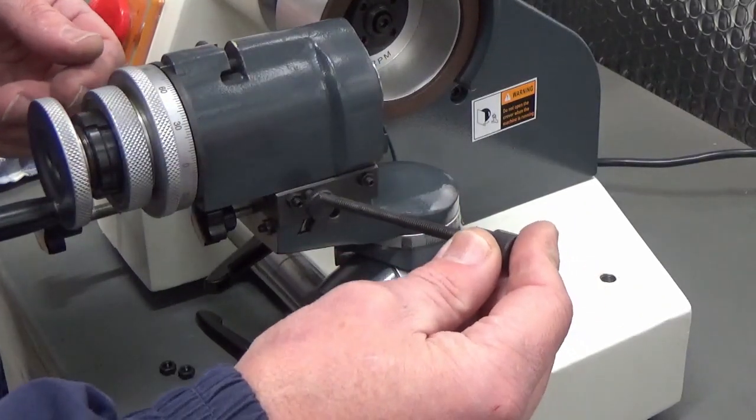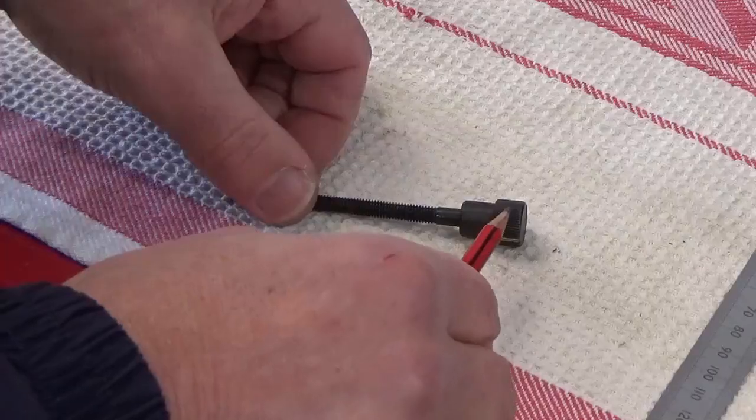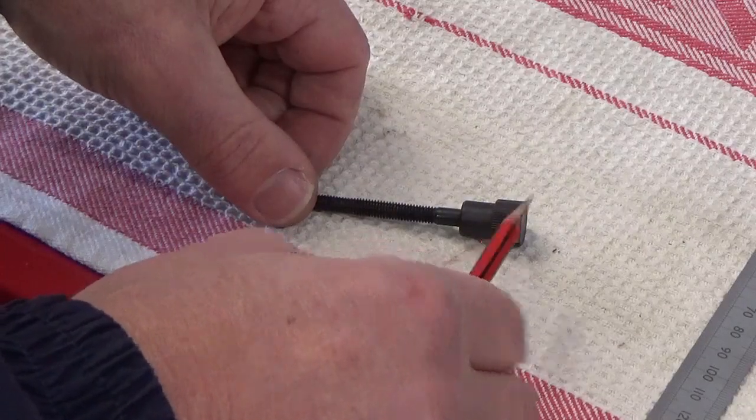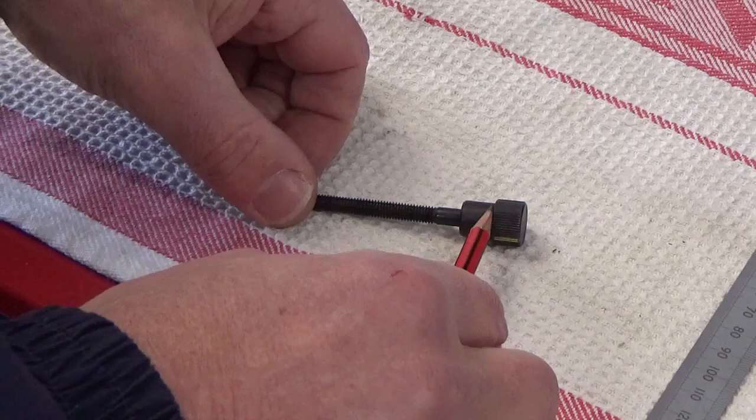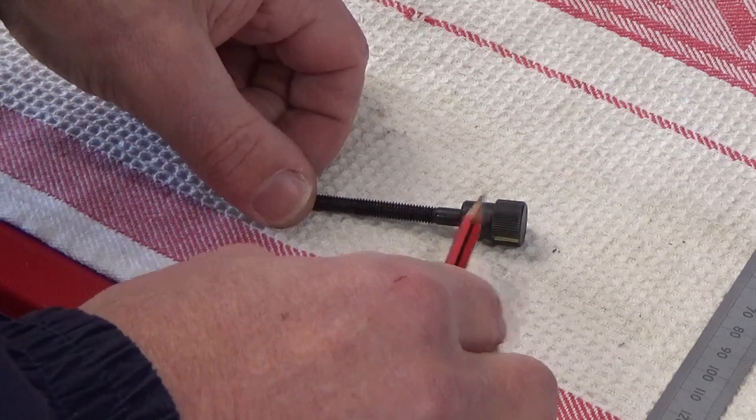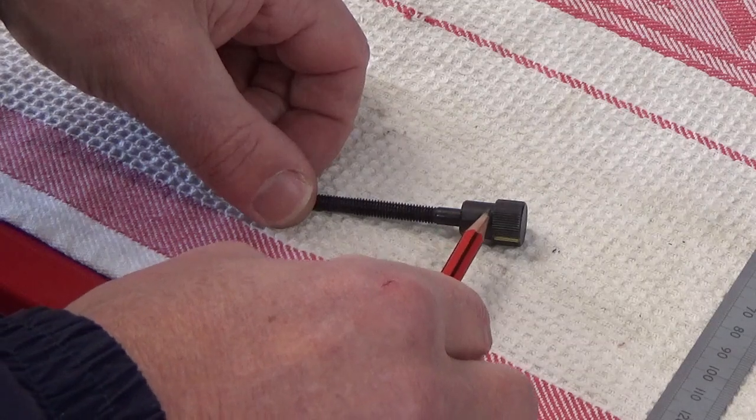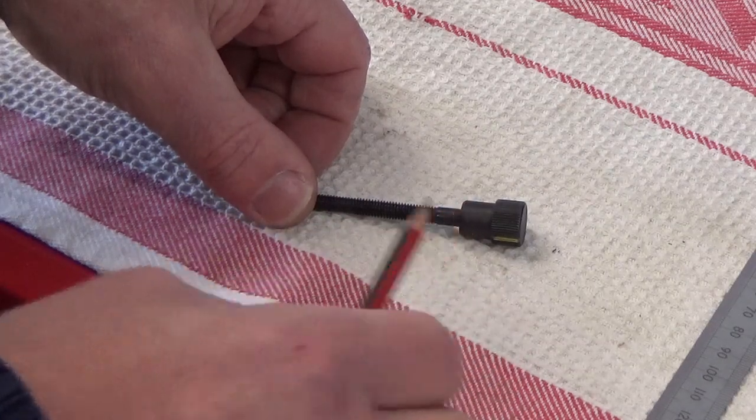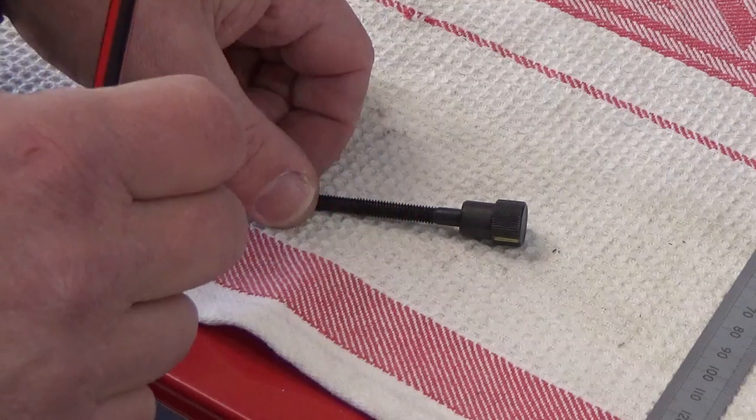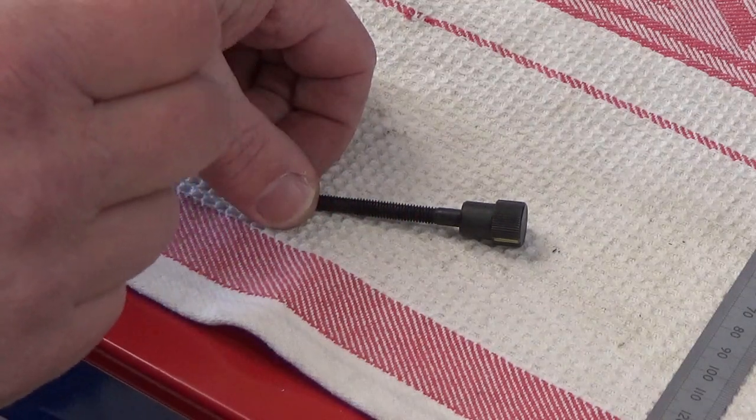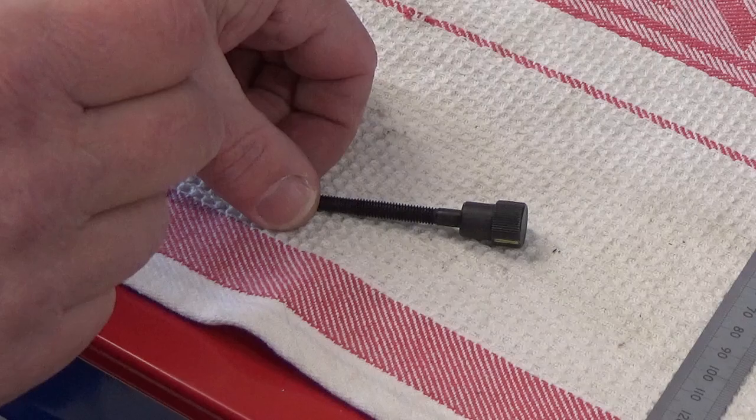You can see here one large bolt with a long thread. We've got a knurled section here that we use to do the adjustment with and then we've got a recess here. So what we're going to do is make a collar that fits over this recess and then we're going to put graduations on that collar to allow us to adjust for 0.1 and 0.05 adjustments.